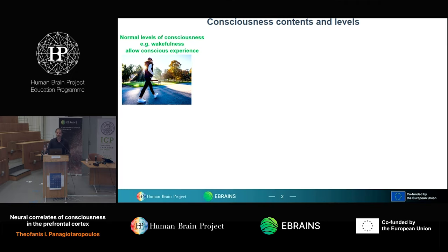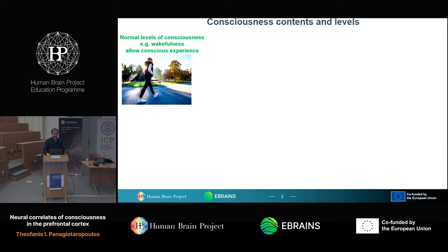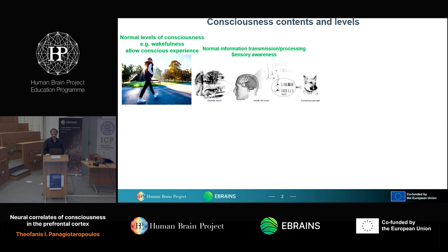Just a quick summary about what we mean when we talk about consciousness. Consciousness can be discriminated between contents and levels. For example, under normal levels of consciousness like in wakefulness, it is possible to have conscious experience — when we walk in a park and we see a dog in front of us, there are neurons in different cortical areas in the brain, with normal information transmission and processing that allows sensory awareness. These neurons activated for specific stimuli like the dog are supposed to constitute the neural correlates of consciousness.